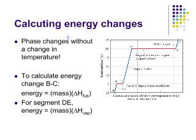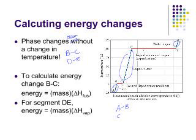Phase changes occur without a change in temperature. B to C is a phase change; D to E is a phase change. Where you have a temperature change — A to B, C to D, and E to F — you're heating the substance and its kinetic energy is increasing. These all show temperature increases, and the average kinetic energy of the particles increases as the temperature increases.